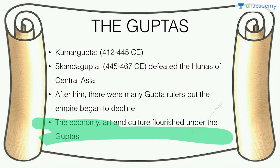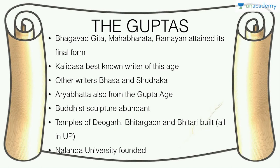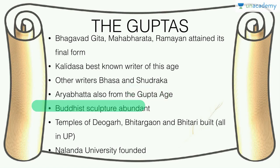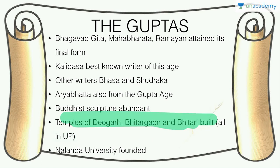Under the early Guptas, economy, art, and culture flourished. The Bhagavad Gita, Mahabharata, drama, etc. attained their final forms. Kalidasa wrote at this point — you really need to know his works. Other important writers include Bhasa and Sudraka. Aryabhata wrote the Aryabhatiya. Under the Guptas, Buddhist sculpture took off and temples of Deogarh, Bhitargaon, and Bhitari were built in UP. Nalanda University was also founded under them.